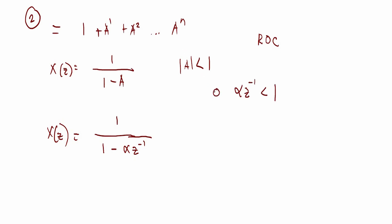Here I just plug in the original value of A — doing what we did in the previous video. Multiplying this by Z results in this. Now that's the region of convergence.